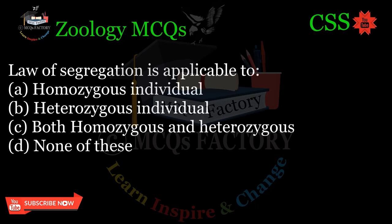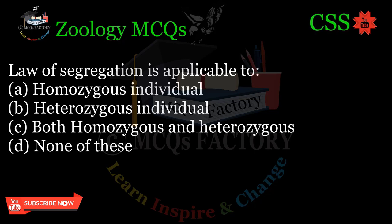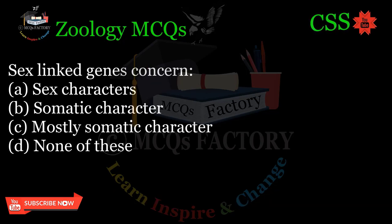Law of segregation is applicable to: A. Homozygous individual, B. Heterozygous individual, C. Both homozygous and heterozygous, D. None of these. Correct answer: D.